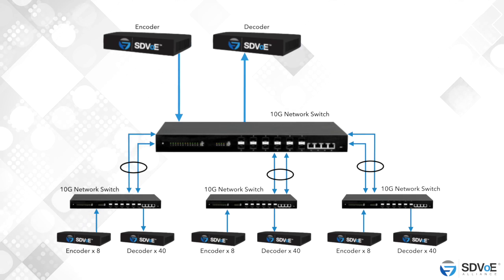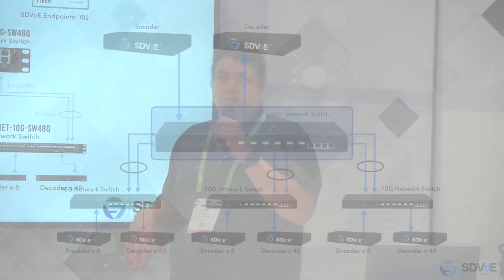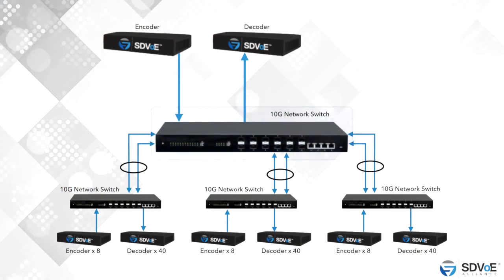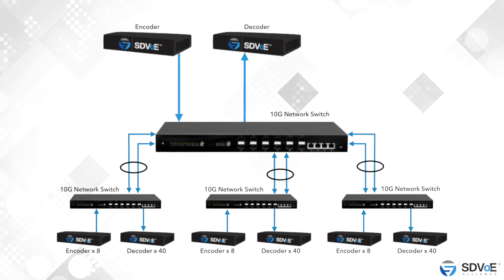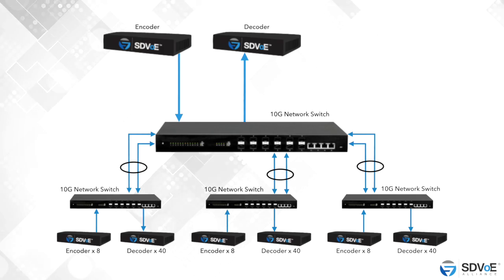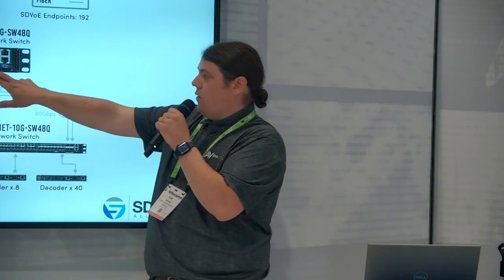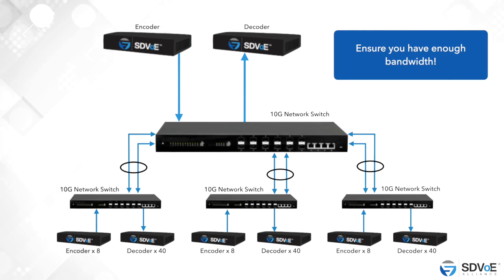You can have huge systems — make them as big as you want — but you have to have the networking infrastructure. Let's look at how we can go beyond a 48-port switch by stacking switches with a core switch. A huge core switch feeds into different edge switches, allowing us to put in 40 decoders, then up to 80, then 120 TVs being routed with different signals. You need to ensure you have enough bandwidth on your loop between switches.